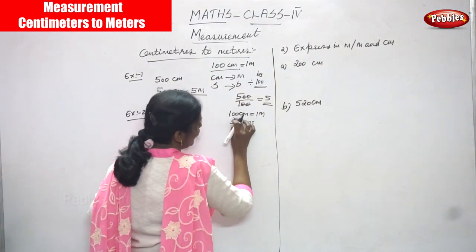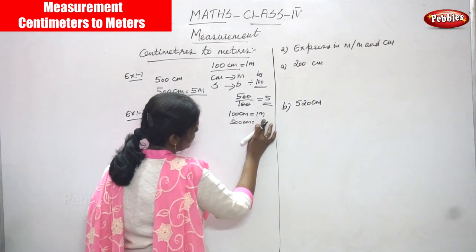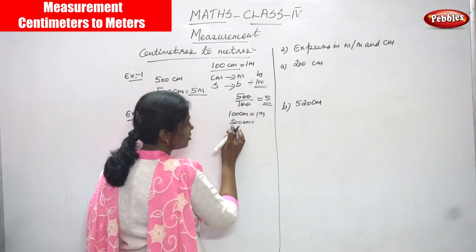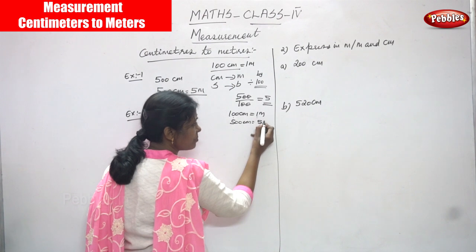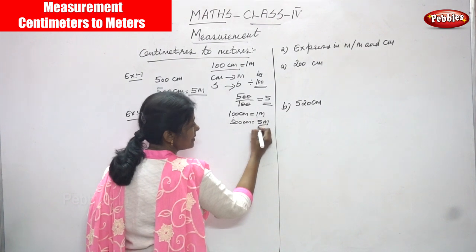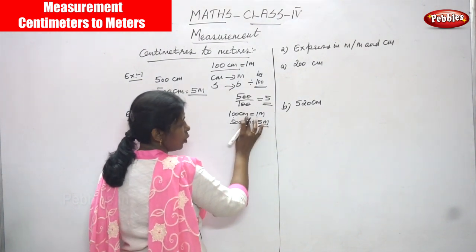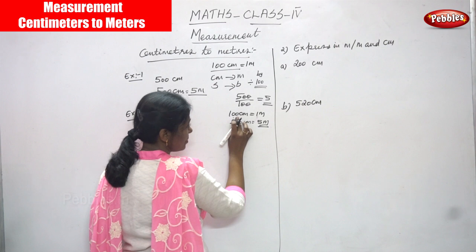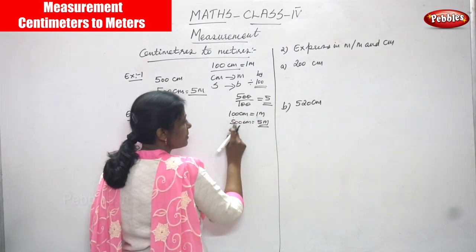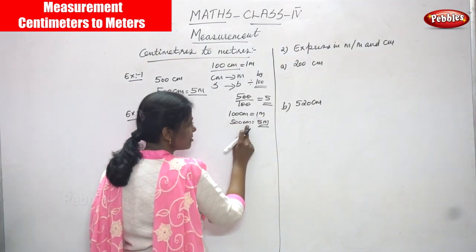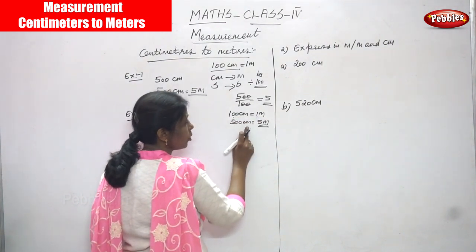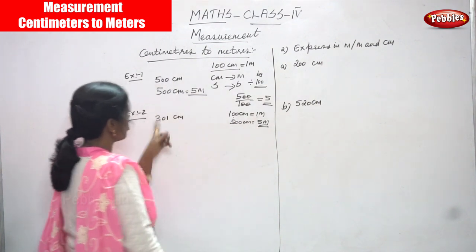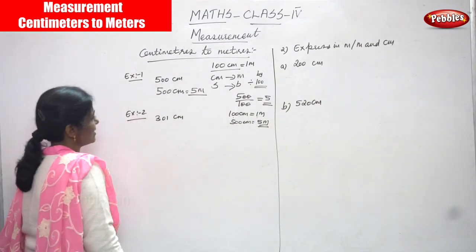So 100 centimeters gives you 1 meter — calculate it in your mind. So 500 centimeters gives you 5 meters, the simple answer. This is the formula you are applying: 100 centimeters gives 1 meter, so 500 centimeters means 5 into 1, you get 5 meters. That is the right answer.